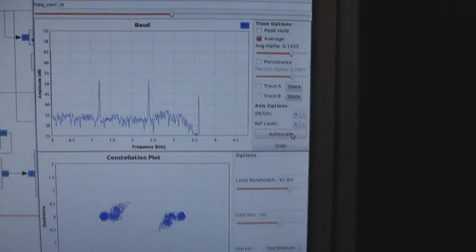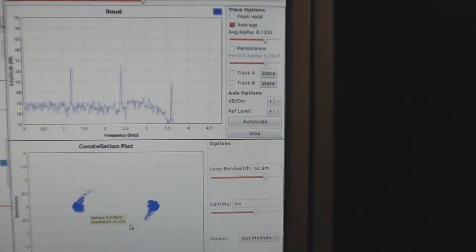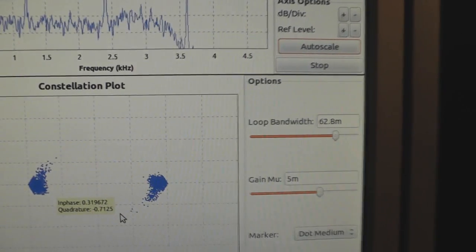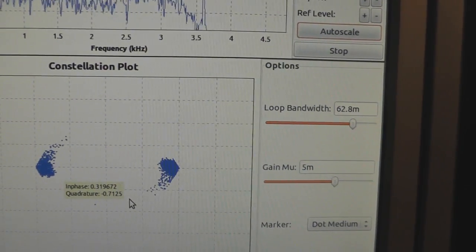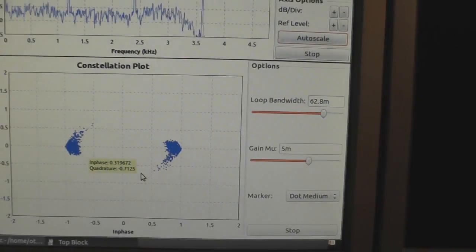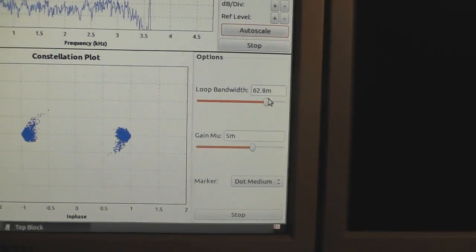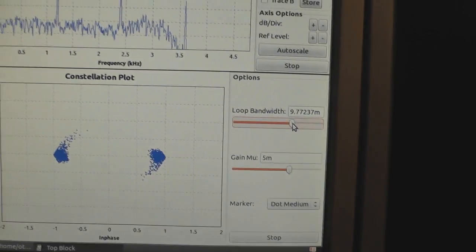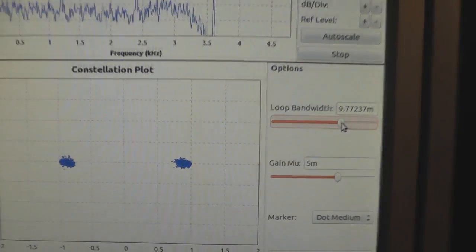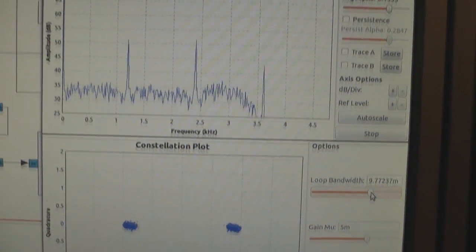First of all, you can see already on the constellation graph here. It's very clean. It takes a while until it's cleaned up by the phase-locked loop. I think the loop bandwidth is a bit too wide. I'm going to put it a bit narrower. And then it should look better. Now we have very clean constellation of the BPSK signal.